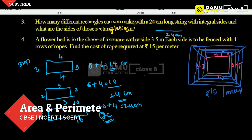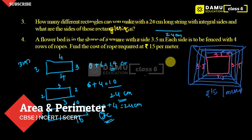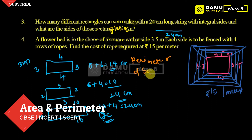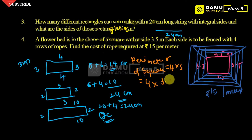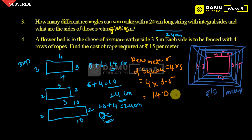We need to find what is the total perimeter. The perimeter of a square is 4 into side, that is 4 into 3.5. So 4 times 5 is 20, and 4 times 3 is 12; 12 plus 2 gives 14. So the perimeter of one square is 14 meters.